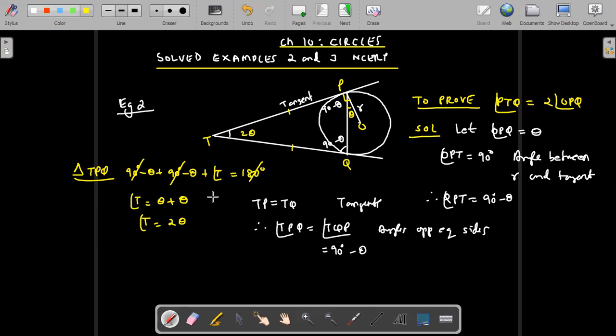So that means we have proved that this particular angle PTQ is twice of OPQ. This is what we had to prove because we had started with the assumption that this is theta and now we have got this as 2 theta. So this angle is double of this. This is the easiest way to do example number two.